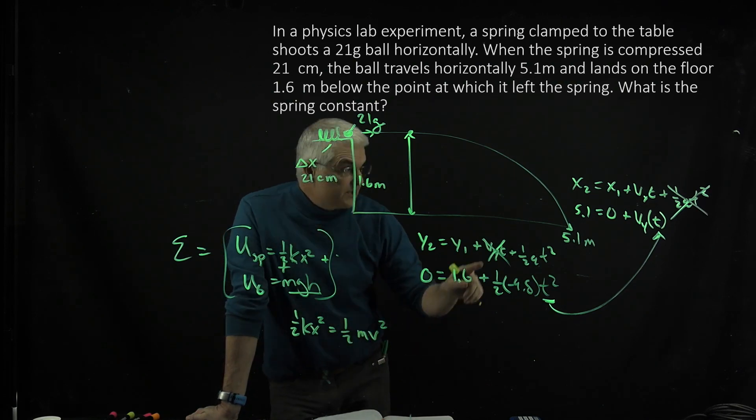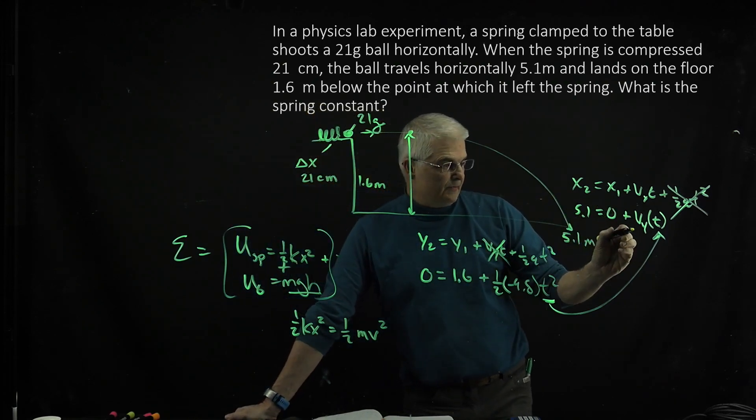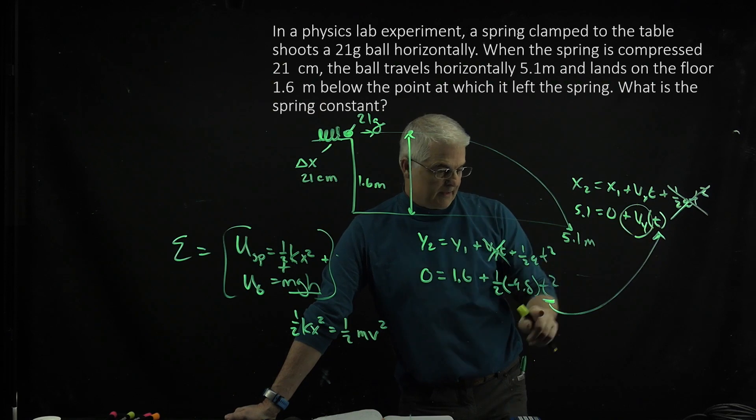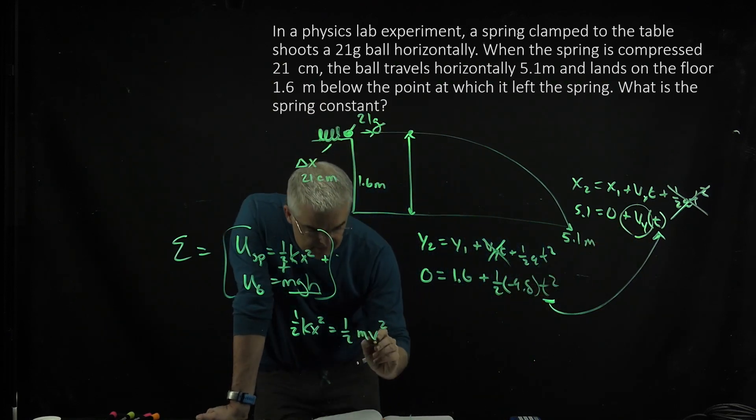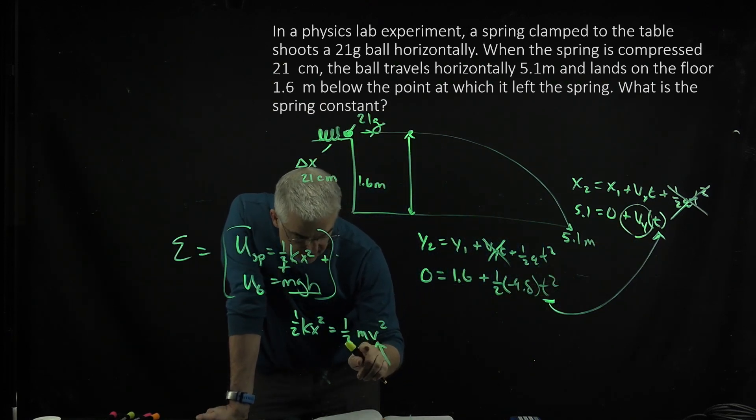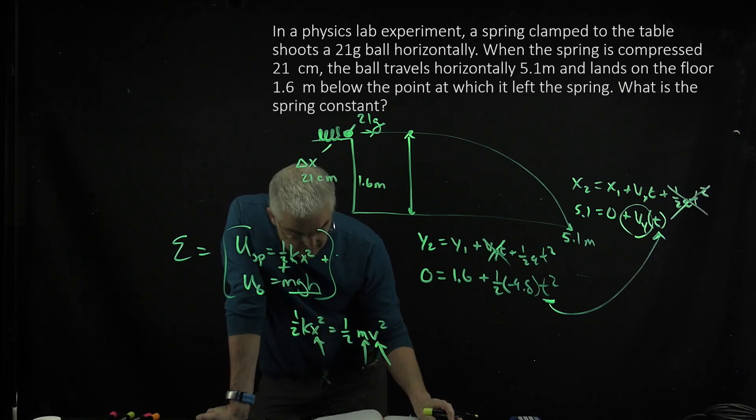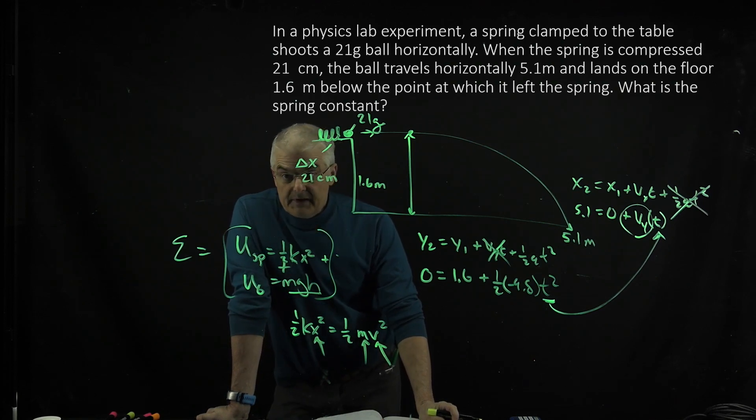But this v is the v that you got when you solved this equation. You got 5.1 = vₓ × t. That's the v that's going to go in here. You know the mass, make sure you convert to kilograms. You know the x, make sure you convert to meters. You have everything except for the k. The halves actually cancel. And don't forget there's squares here, and you should be able to get the answer.